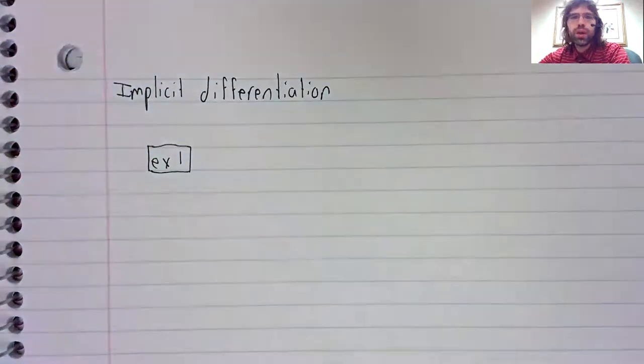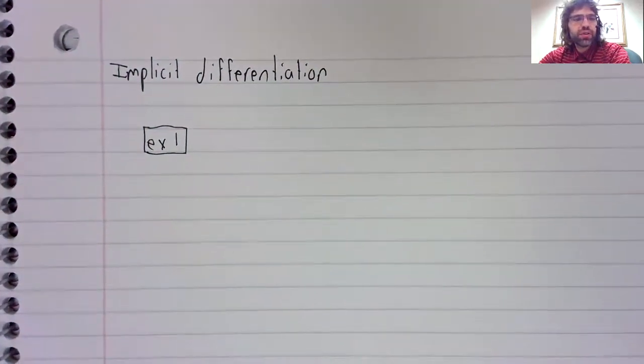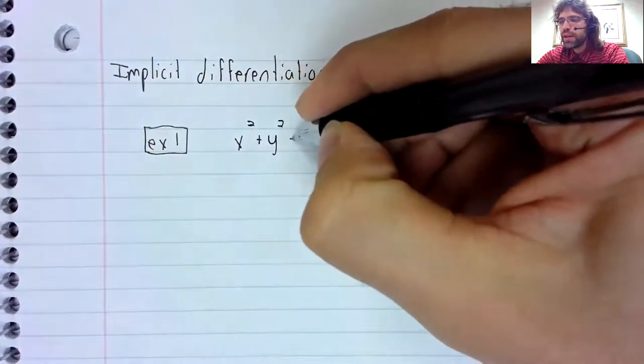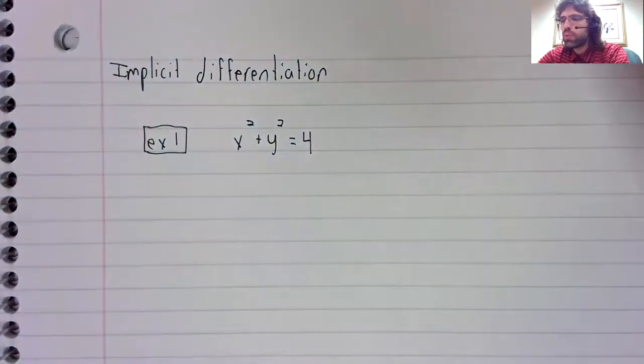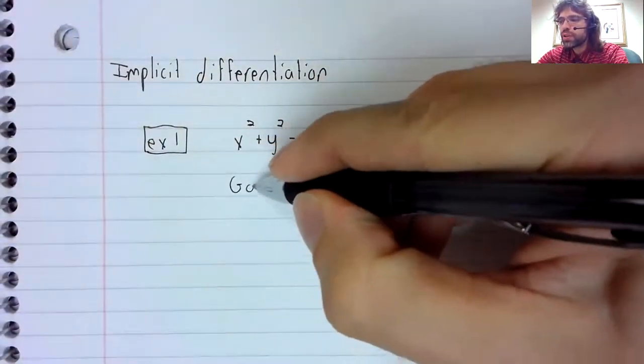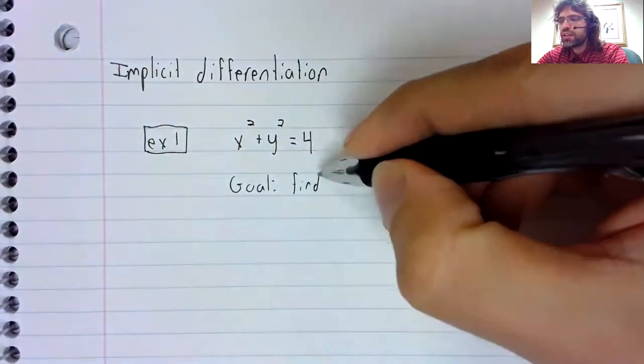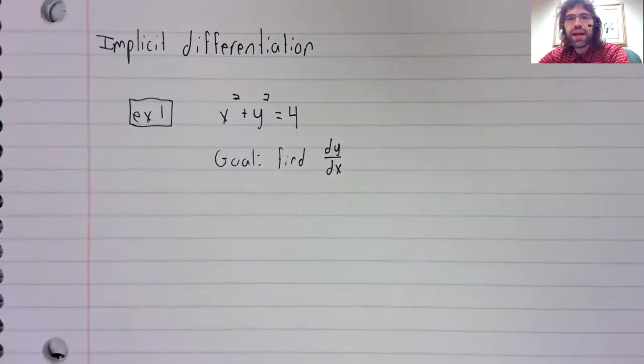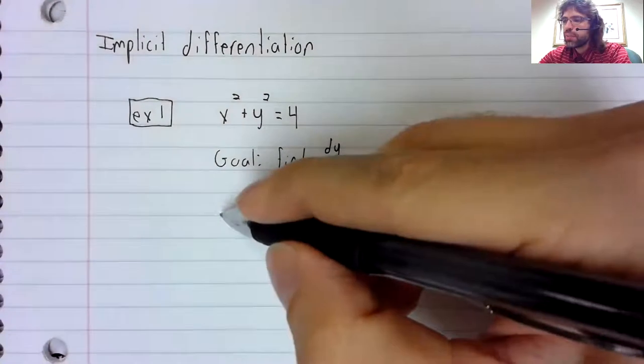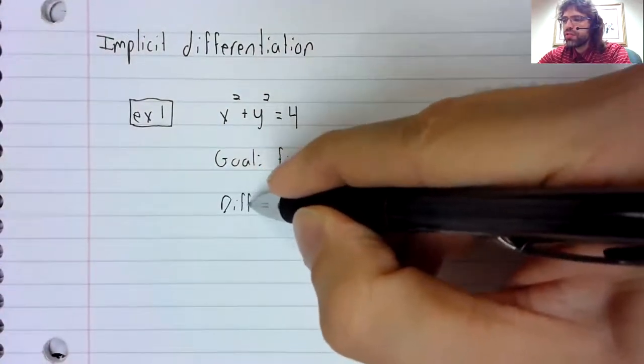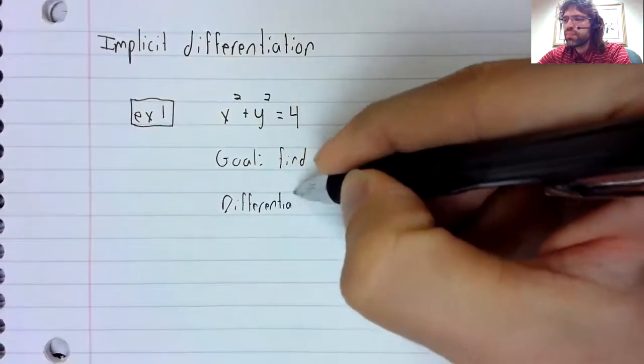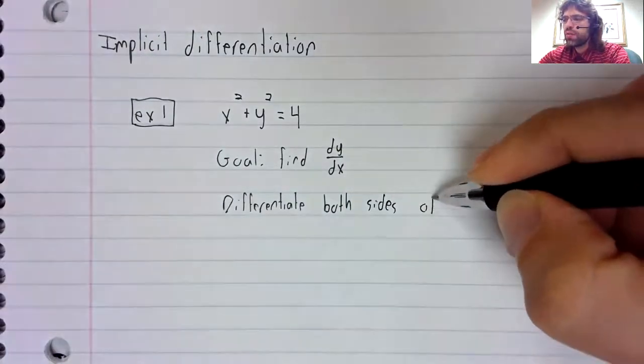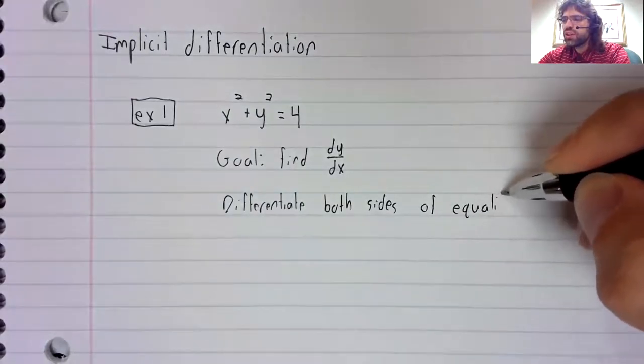Example one will be the example we started with in the previous video: x squared plus y squared equals four. Let's find the derivative of y with respect to x. I am going to differentiate both sides of this equality.